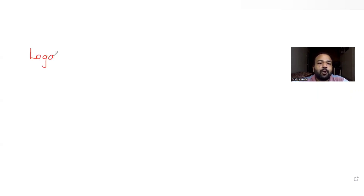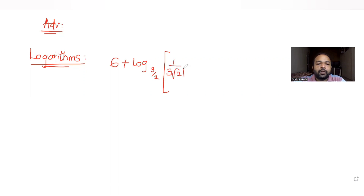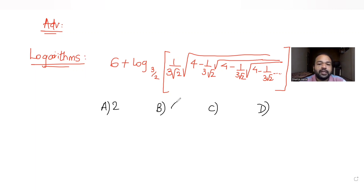So today's question, we are taking this up from the topic of logarithms and we are continuing our series of questions on JEE Advanced. We have taken this from the year 2012. The question tells us to find the value of 6 plus log to the base 3/2 of the expression: 1 by 3 root 2 times the square root of 4 minus 1 by 3 root 2 times the square root of... and this continues on and on to infinity. The four options given to us are 2, 4, 6, and 8.